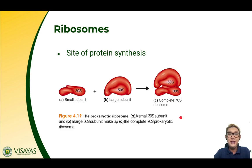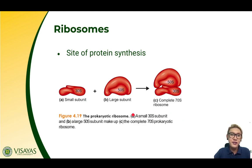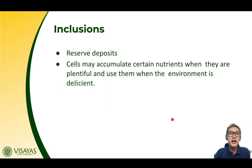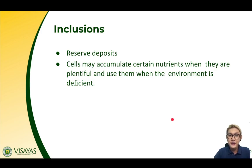Ribosomes are found in the nucleoid associated with the bacterial chromosome. They help in protein expression, protein synthesis, or translation. Each ribosome is made up of a small subunit (30S) and a large subunit (50S), which together make up a 70S ribosome. Inclusions, on the other hand, are reserve deposits. In certain conditions when nutrients are plentiful, the bacterial cell accumulates them inside and uses them when the environment becomes deficient — a form of saving nutrients for tough times.